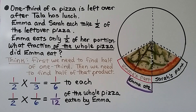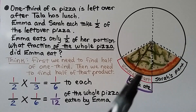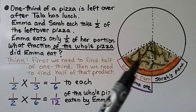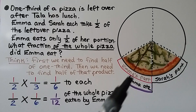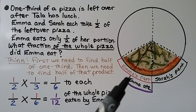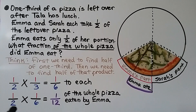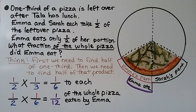Then we need to find half of that product. We split one-third in half to get sixths, and Emma only ate half of her sixth. So we find one-half times one-sixth, which equals one-twelfth of the whole pizza eaten by Emma.